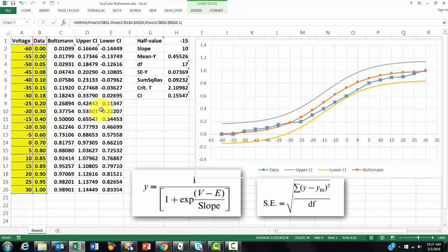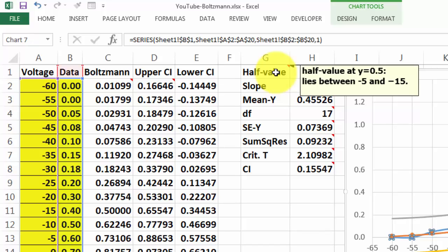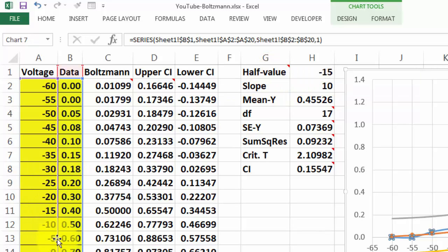When I click on that bluish line, you will see this is basically what we are plotting. Then we guess, this is an educated guess, what the half value is. The half value at y equals 0.5 lies between probably minus 5 and minus 15 somewhere in this range.